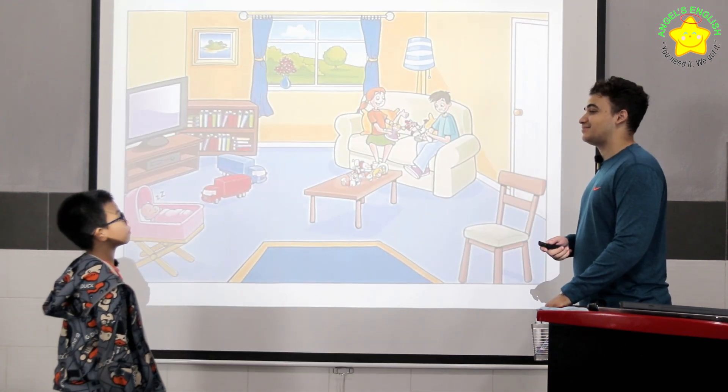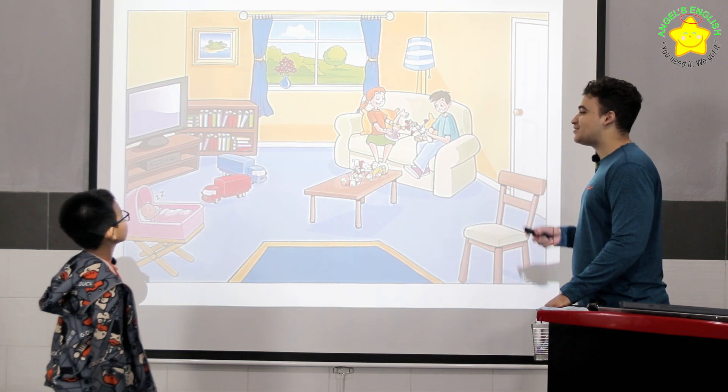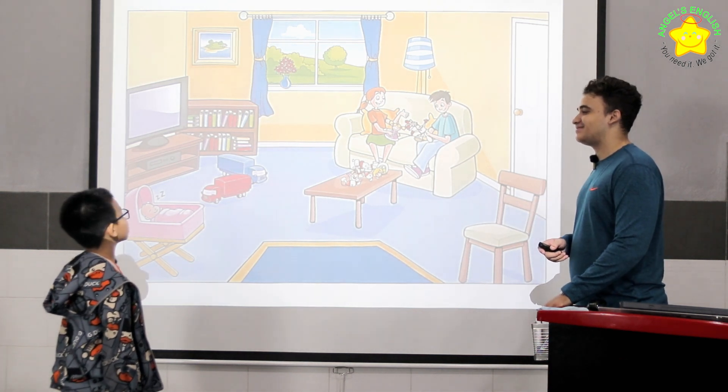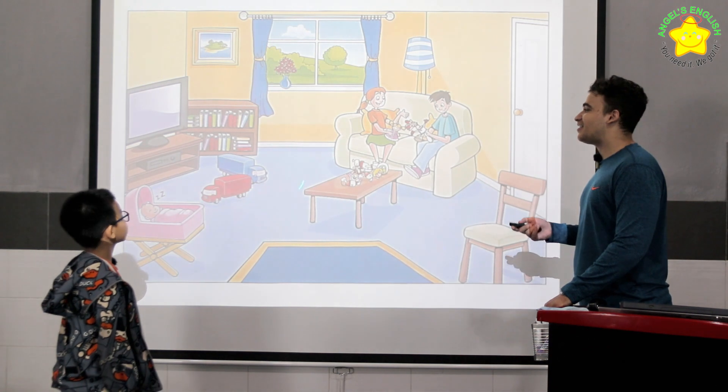Where are they? They are in the living room. How many people do you see? I can see three people. Very good.